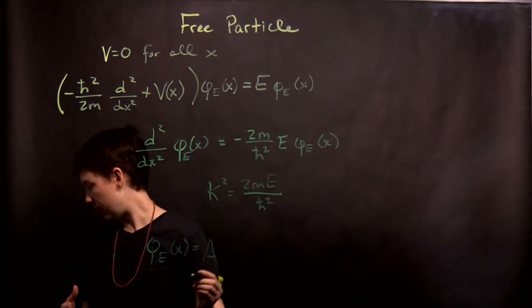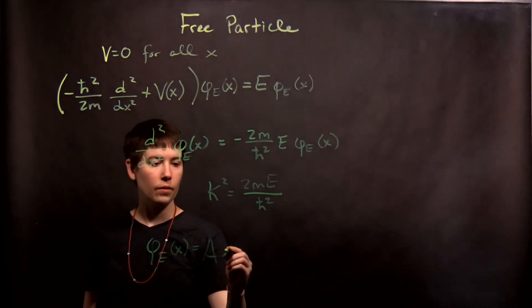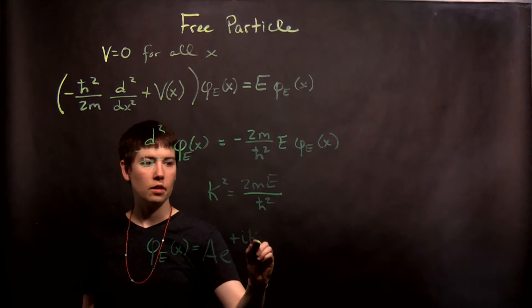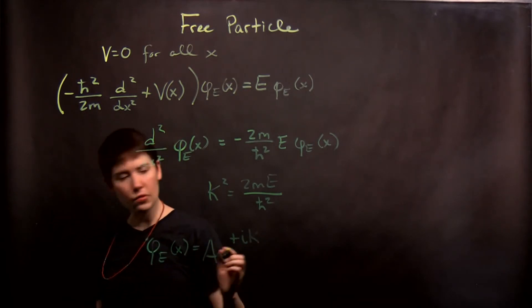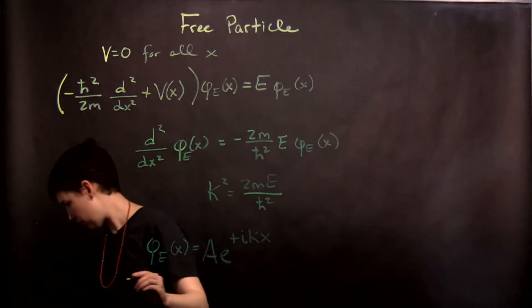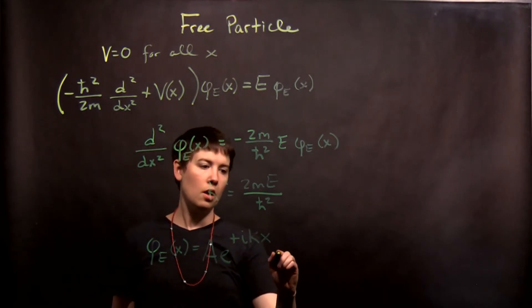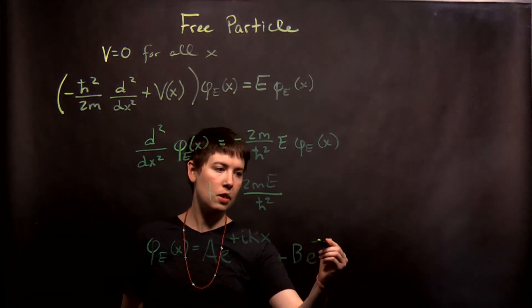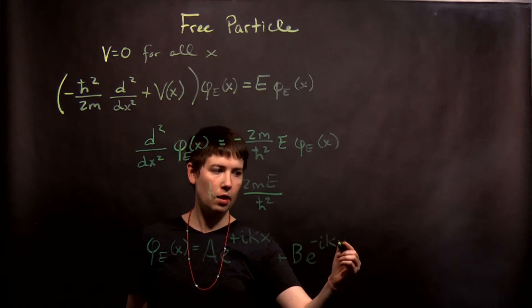So we can then say that our solution is going to be A e^(+ikx) plus B e^(-ikx).